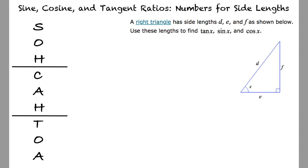To find the tangent, we start by identifying the opposite side and the adjacent side with respect to the angle x. f is the length of the side opposite the angle x, and e is the length of the side adjacent to the angle x, right?